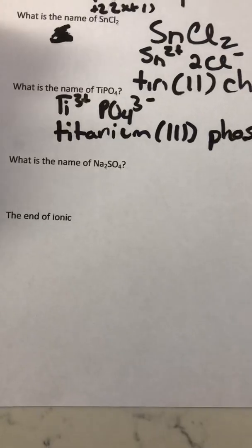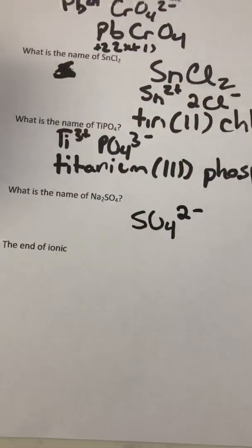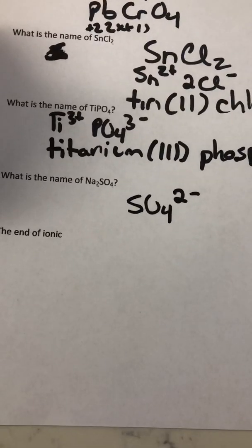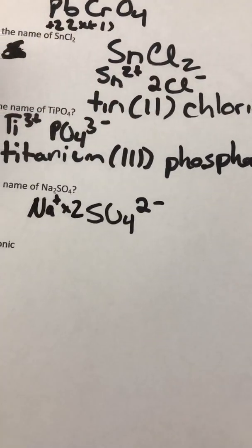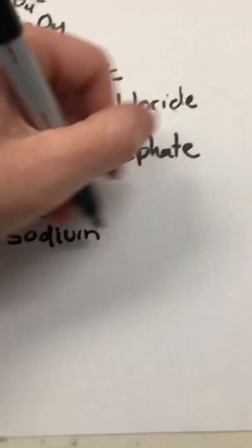Last one: Na2SO4. We have sodium and sulfate (SO4 2-minus). Do you need to figure out sodium's charge, or do you already know it? You should already know it — sodium is positive one. Don't fall into the trap of thinking you need Roman numerals here; sodium's charge is known. You don't need to indicate the charge. This is simply sodium sulfate.